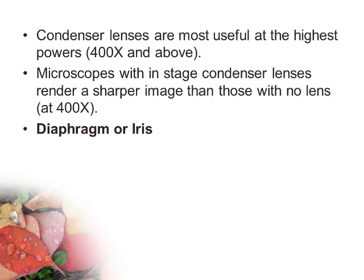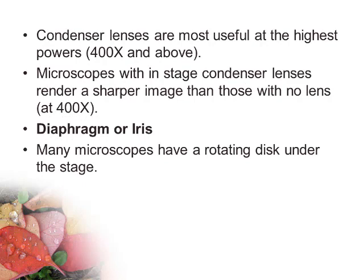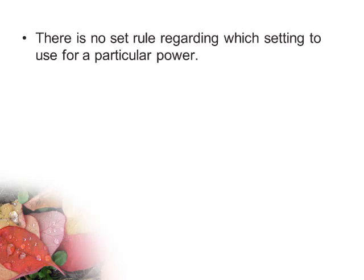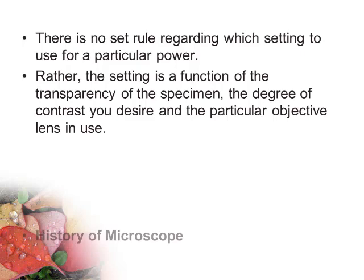The diaphragm, or iris: many microscopes have a rotating disc under the stage. This diaphragm has different-sized holes and is used to vary the intensity and size of the cone of light projected upward into the slide. There is no set rule for which setting to use for a particular power; the setting is a function of specimen transparency, desired contrast, and the objective lens in use.